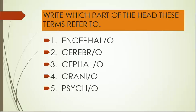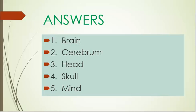Write which part of the head these terms refer to. Number one: encephalo. Number two: cerebro. Number three: cephalo. Number four: cranio. Number five: psycho. Answers. Number one is brain. Number two is cerebrum. Number three is head. Number four is skull. Number five is mind.